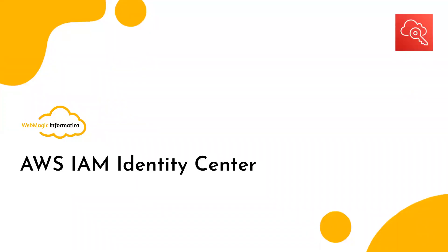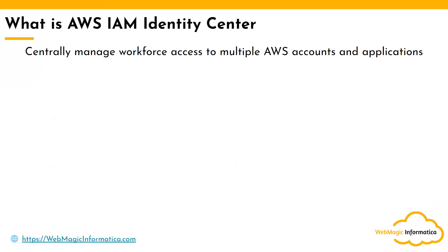In this video we are talking about AWS IAM Identity Center. You might already be aware about AWS Identity and Access Management service which lets you create users, assign policies which are nothing but permissions, and also create roles. But this you need to do in every single account. What if your organization has multiple AWS accounts? In that scenario, creating a user in every AWS account is very difficult, and doing cross-account access is also very difficult.